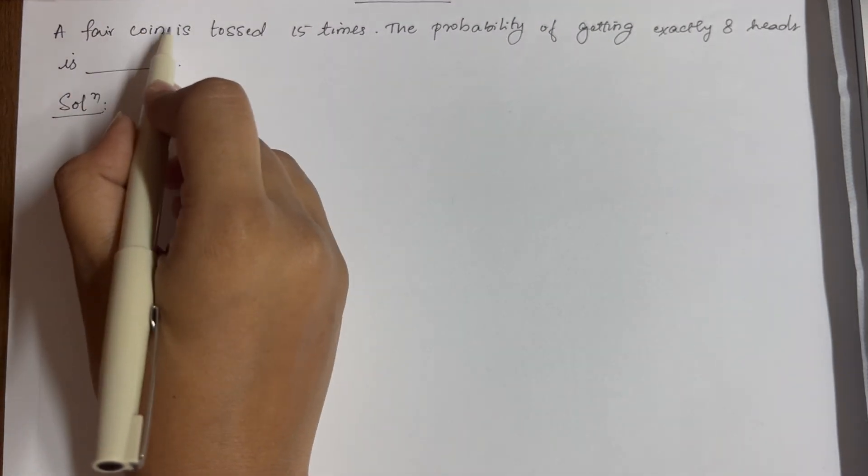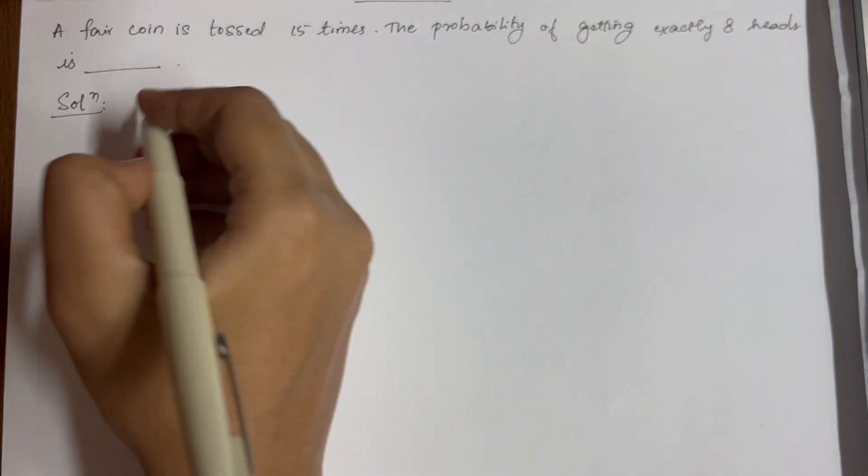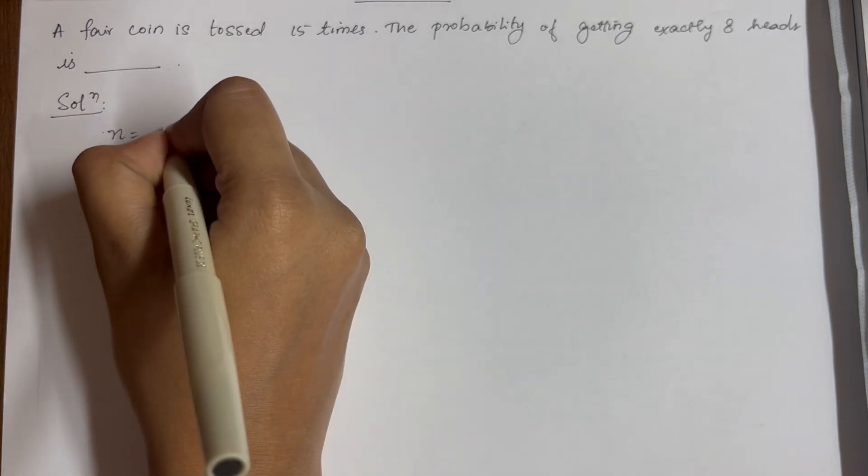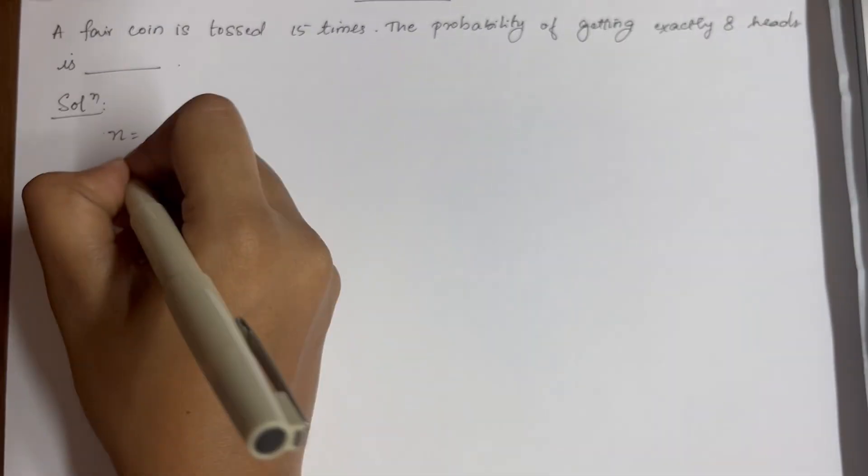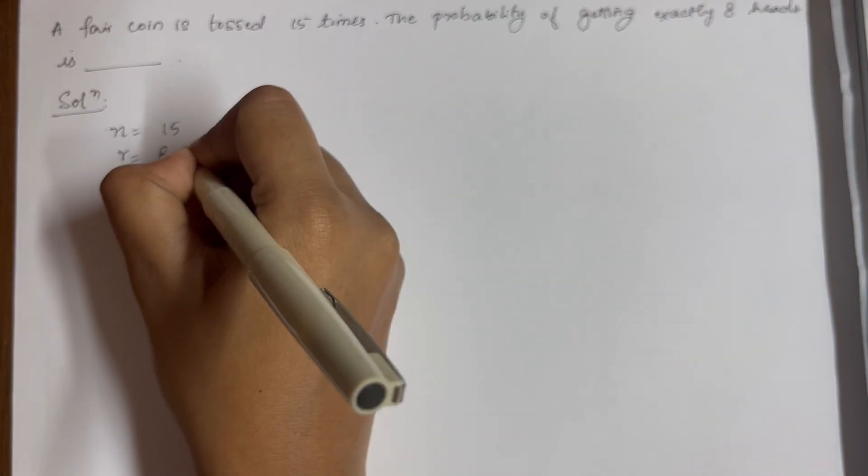Here a fair coin is tossed for 15 times, so n value will be 15. And the probability of getting exactly 8 heads, so our r value is 8 heads.